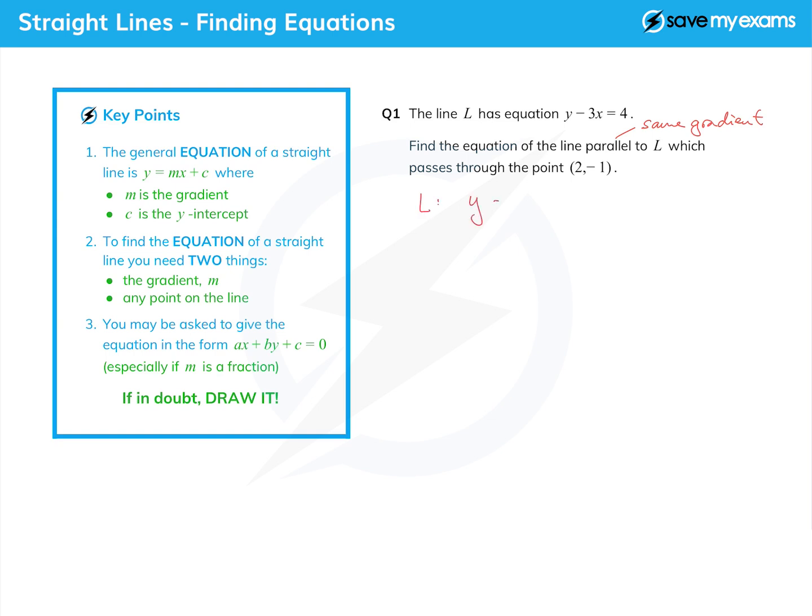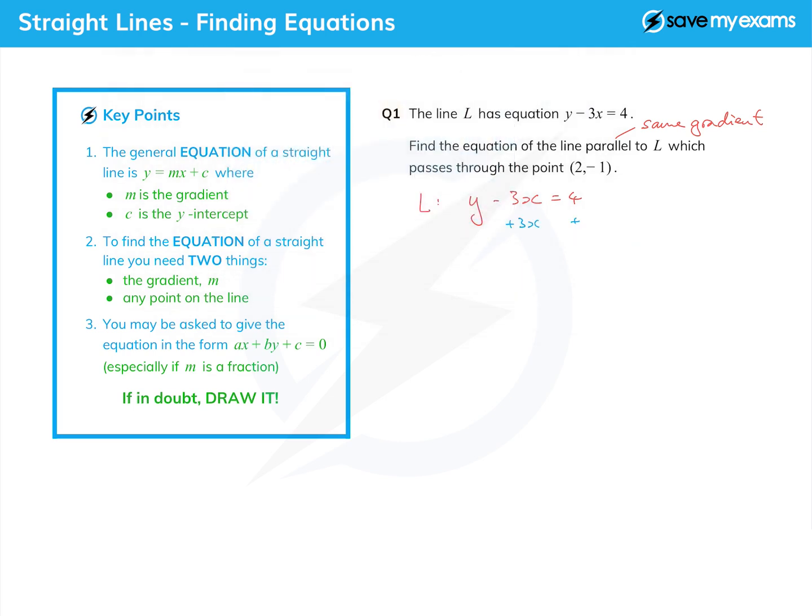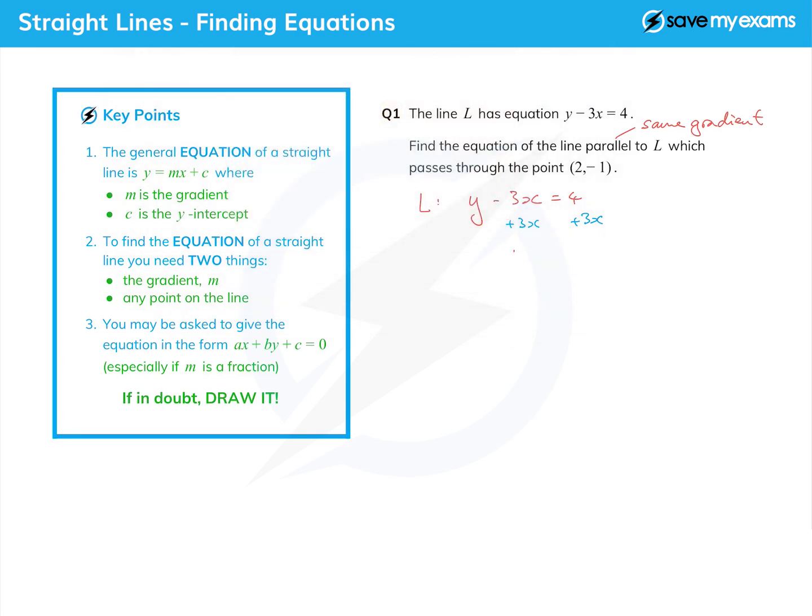Let's look at the line l: y minus 3x equals 4. Get it into the right form by rearranging to y equals, so we add 3x to both sides and that gives us y equals 3x plus 4.